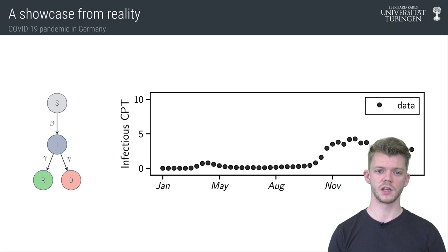Beta controls how quickly susceptible people get infected and thus can be loosely interpreted as a sort of contact rate. On the right you see the infected cases per 1000 people in Germany over one year. The goal is now to fit an SIRD model to the observed data and at the same time gain uncertain information about the contact rate beta over time.